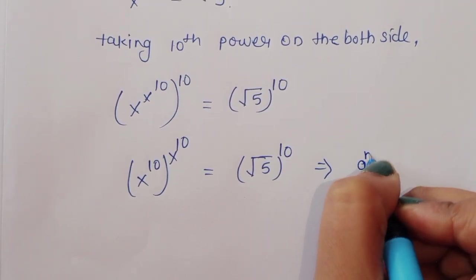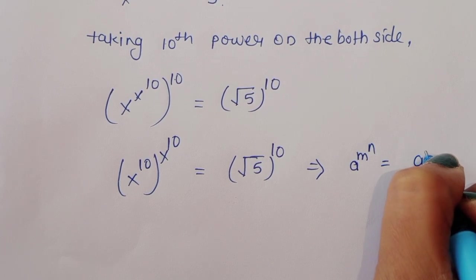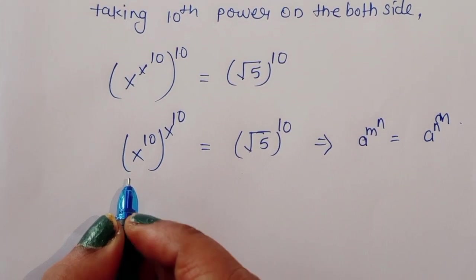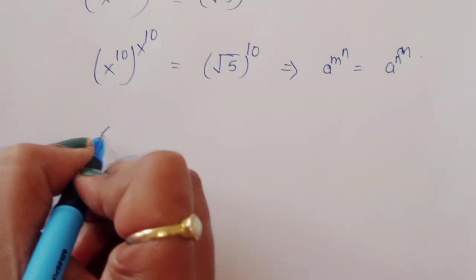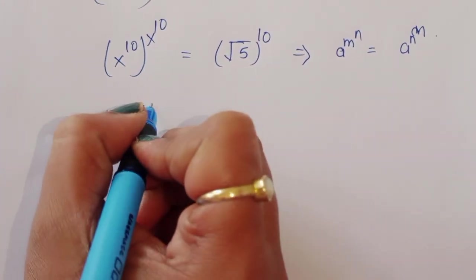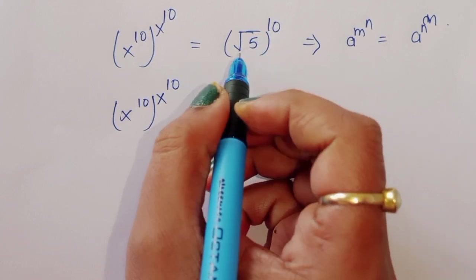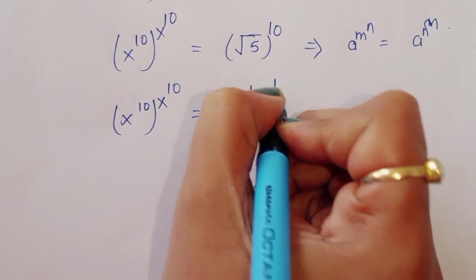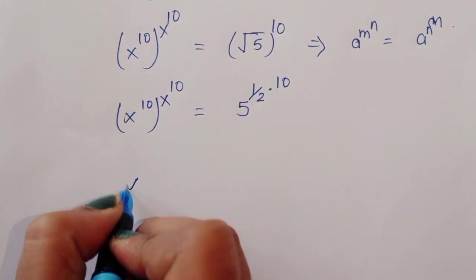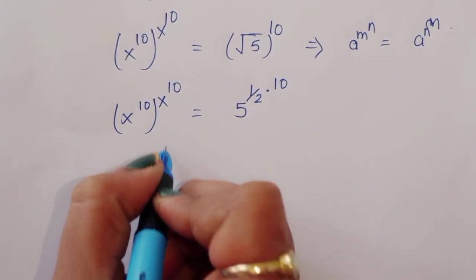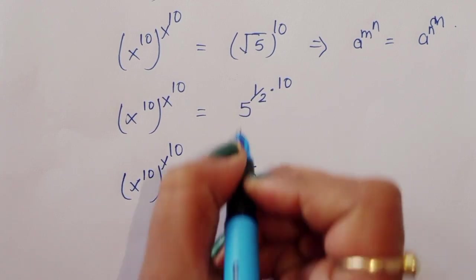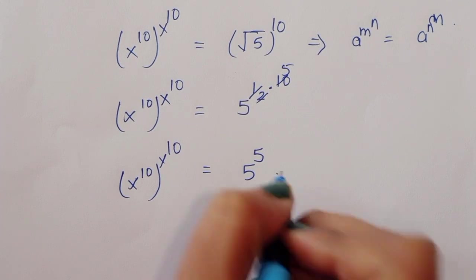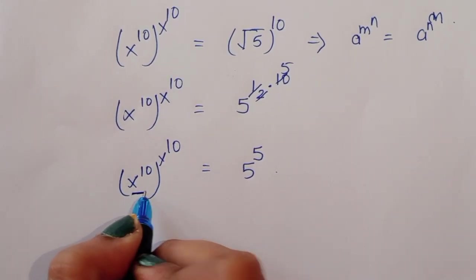Because we know the formula: a power m, power n is equal to a power n, power m. We can write it this way. Therefore, x power 10, raised to x power 10, is equal to square root of 5 — that is 5 raised to 1/2 — raised to the power 10, which equals 5 raised to the power 5.